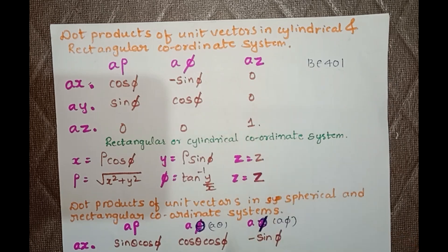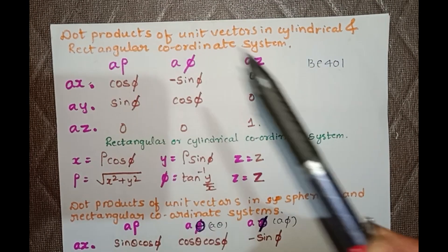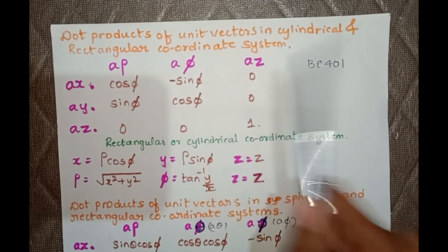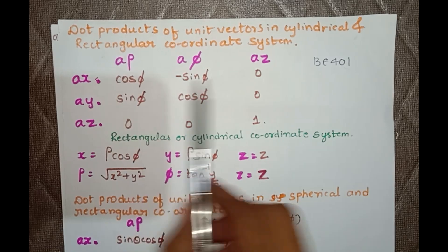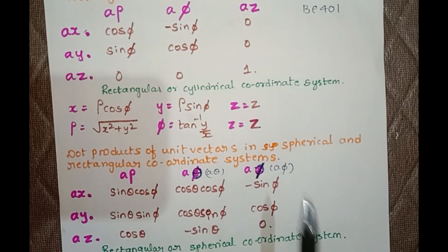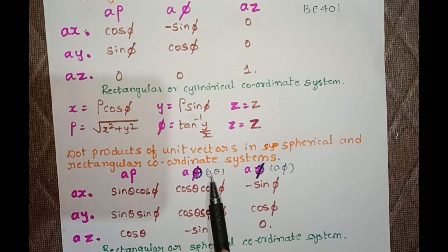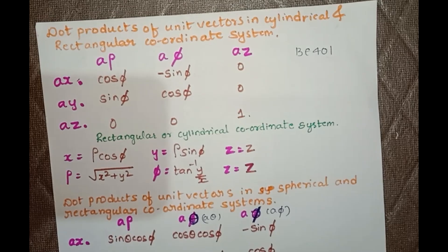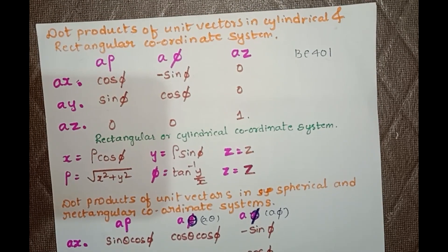In Cartesian or rectangular coordinate system we have x, y, and z. In cylindrical coordinate system we have ρ (rho), φ (phi), and z. For the spherical system we have ρ (rho), θ (theta), and φ (phi). In the examination they ask conversion of one system to another — rectangular or Cartesian to cylindrical, or rectangular Cartesian to spherical, or spherical to Cartesian.